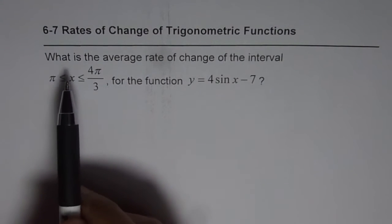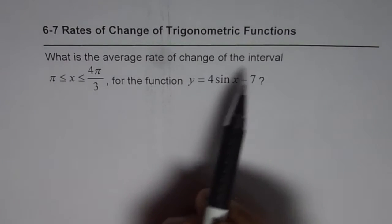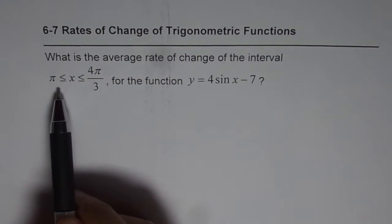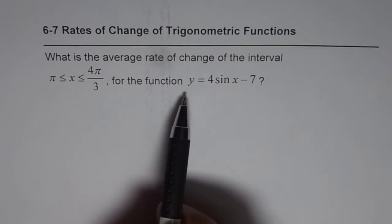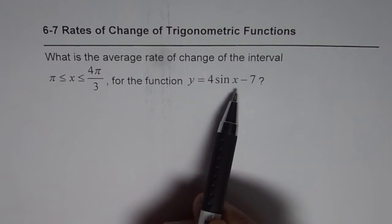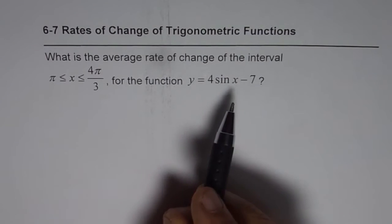Question is, what is the average rate of change on the interval π ≤ x ≤ 4π/3 for the function y = 4 sin x - 7?